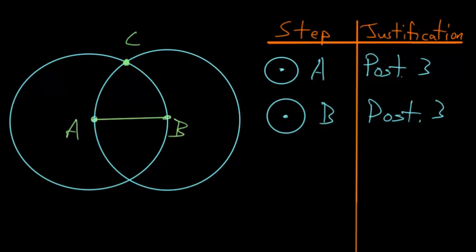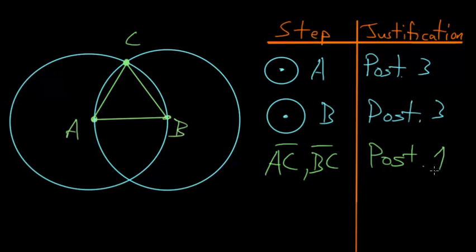And what we can do from here is to connect the points A and C, and B and C. And keep in mind that creating these lines AC and BC just come from postulate number 1, which says that we can connect any two points with a straight line.